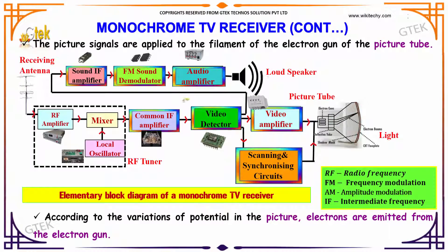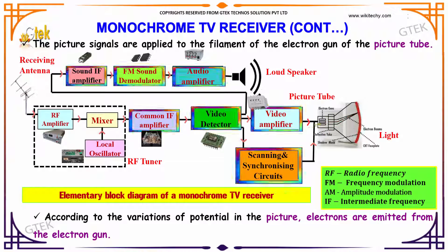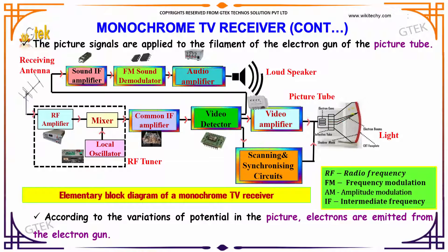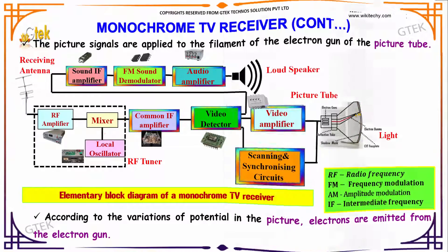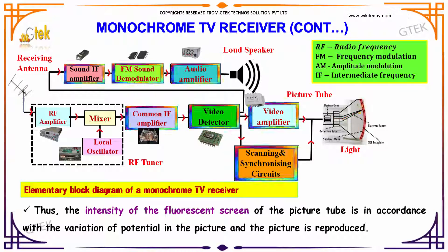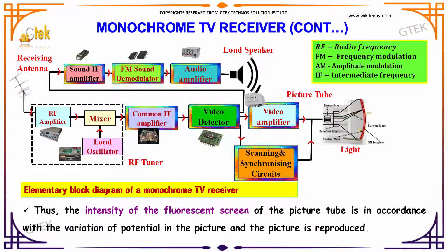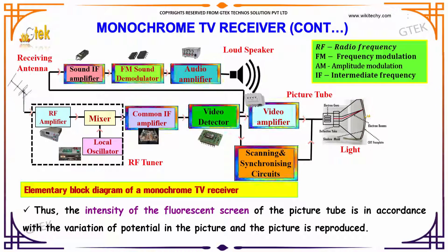The picture signals are applied to the filaments of the electron gun of the picture tube. According to the variation of the potential in the picture, the electrons are emitted from the electron gun. Thus, the intensity of the fluorescent screen of the picture tube is in accordance with the variation of the potential in the picture, and the picture is reproduced.